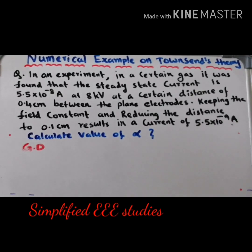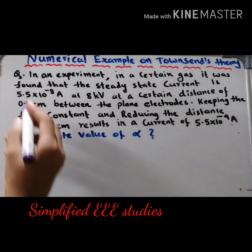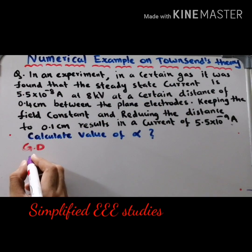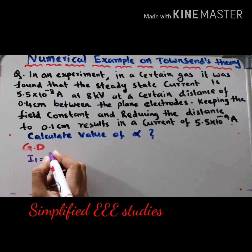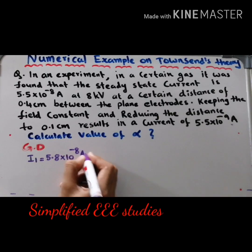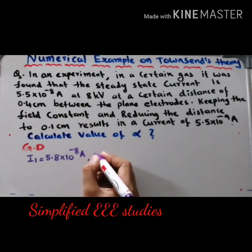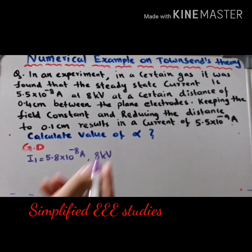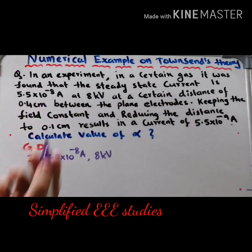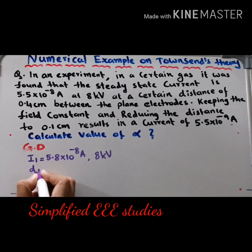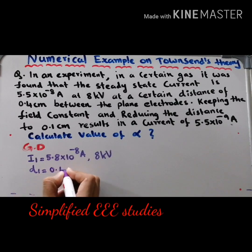Given data: In the experiment, the steady state current I1 = 5.5 × 10⁻⁸ ampere at 8 kV, provided the potential is 8 kV between the two electrodes, and at a distance D1 = 0.4 centimeter between the plane electrodes.